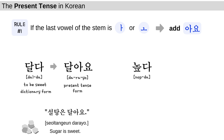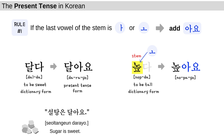Next, 높다. 높다 is an adjective which means to be tall, and 높다 is the dictionary form. Let's change the dictionary form into the present tense form. First, you drop the last syllable 다. Now you have 높 left, which is the stem. Then you find the vowel of the stem — it is 오. So according to rule number 1, you are going to add 아요 to 높. 높아요.